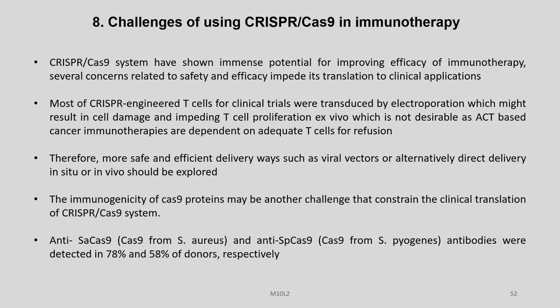Challenges of using CRISPR-Cas9 in immunotherapy: In spite of its tall promises, the CRISPR-Cas9 system has many safety and efficacy issues that impede its translation to clinical applications. Most CRISPR-engineered T-cells for clinical trials were transduced by electroporation, which might result in cell damage and impede T-cell proliferation ex vivo, which is not desirable as ACT-based cancer immunotherapy is dependent on adequate T-cells for reinfusion. Therefore, more safe and efficient delivery methods such as viral vectors or alternatively direct delivery in situ or in vivo should be explored.